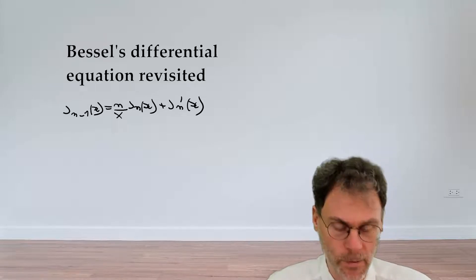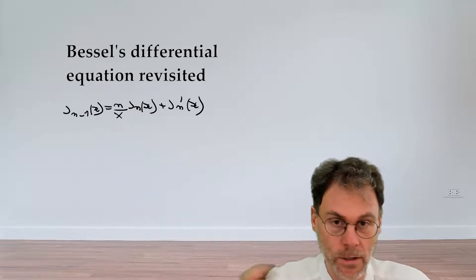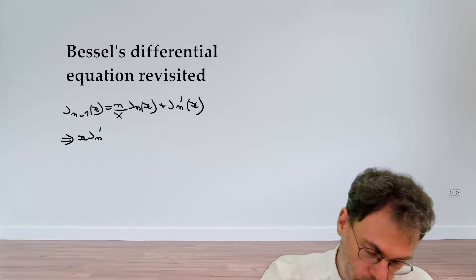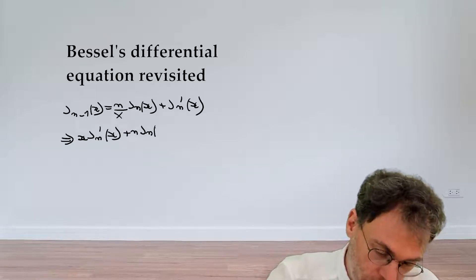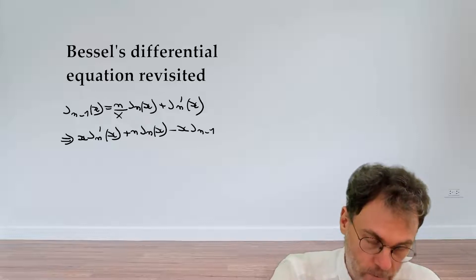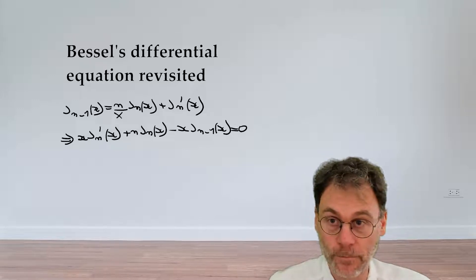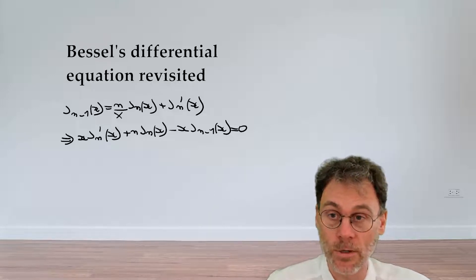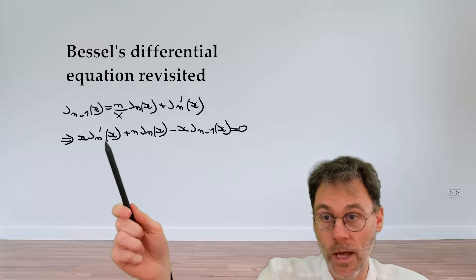Let's clean this up by multiplying everything by x to eliminate the denominator and reorder terms, giving us: x J_n'(x) + n J_n(x) - x J_{n-1}(x) = 0. We're still far from Bessel's differential equation because it has second-order derivatives and this expression only has a first-order derivative.